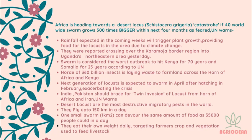Rainfall expected in the coming weeks will trigger plant growth, providing food for locusts. Climate change and rainfall fuel locust feeding and reproduction. Locusts were reported crossing the Karamoja border region into Uganda's northeastern area. This swarm is considered the worst outbreak to hit Kenya, and in Somalia there has been no such invasion in 25 years. A swarm of 360 billion insects is laying waste to farmland across the Horn of Africa.